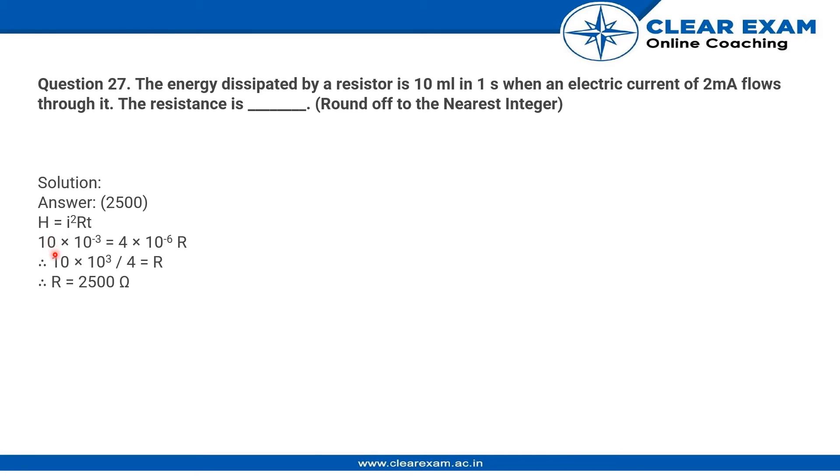H is 10 millijoules which is 10 into 10 power minus 3. I is 2 milliamperes or 2 into 10 power minus 3, the whole square, which becomes 4 into 10 power minus 6.